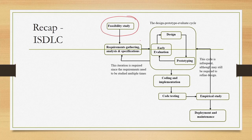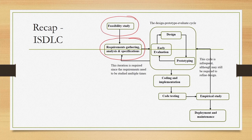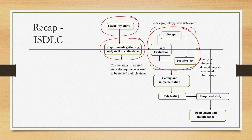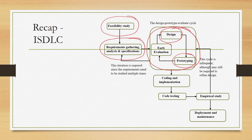Once it is found to be feasible, we go for the second stage: requirement gathering, analysis, and specification. In this stage we try to gather end user requirements that will help us develop a system that is going to be usable. Once that is done, we enter into the design-prototype-evaluate cycle, where these three sub-stages together constitute a stage and work in a cycle.